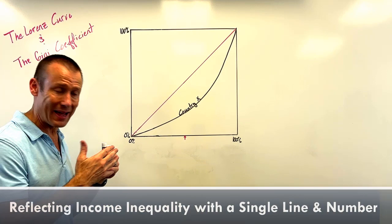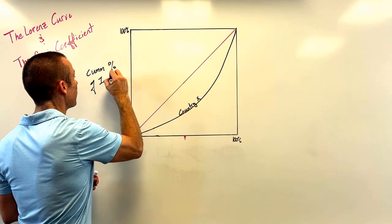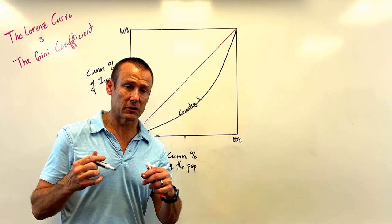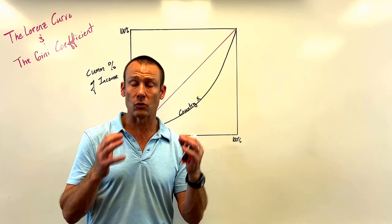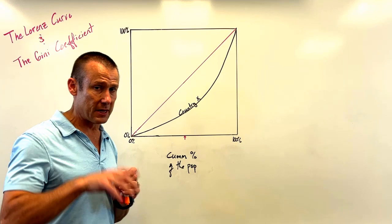Specifically, he put the cumulative percent of income on the vertical axis and the cumulative percent of the population on the horizontal axis. Here at Econ Busters, we want students to really understand their axes. The task is to represent income inequality of a country, so it makes sense to have income on one axis and population on the other — specifically the cumulative percentages of each.